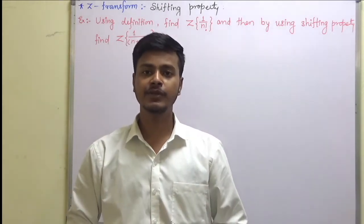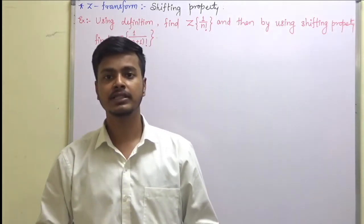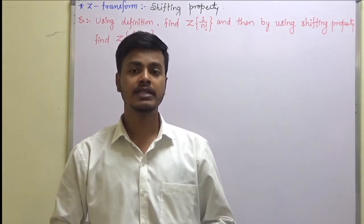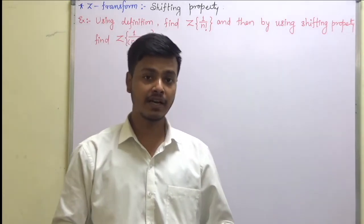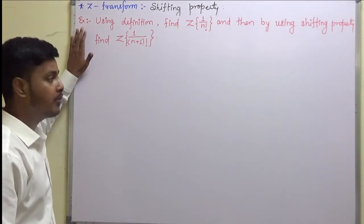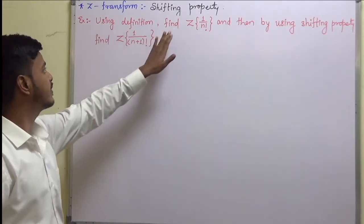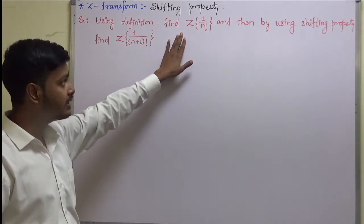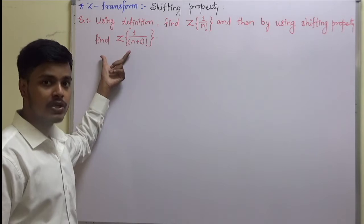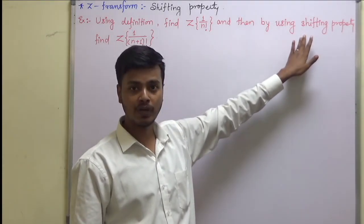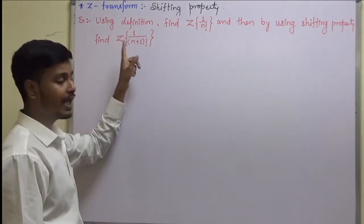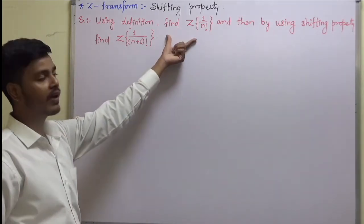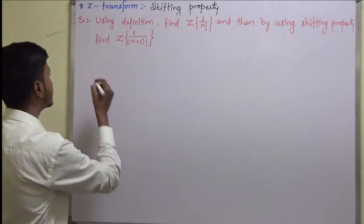Hello and welcome to this learning video. In the last class we have seen what is the shifting property of z-transform, and here we are going to take a problem on shifting property. In this problem we have to use the definition to find out the z-transform of 1 upon n factorial, and then by using the shifting property find out z of 1 upon (n+k) factorial. So let us first find out the z-transform of 1 upon n factorial.